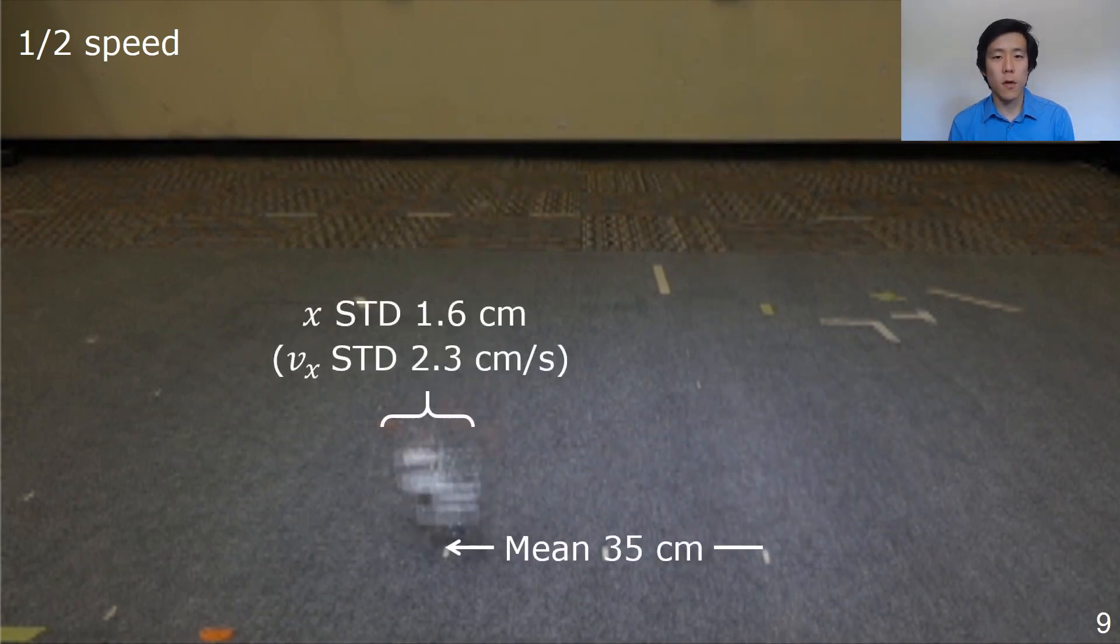Salto 1P jumped an average of 35 centimeters, or just over one full body length, and its variation in distance was only 1.6 centimeters standard deviation, now accurate enough to hit narrow targets.